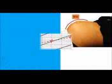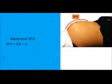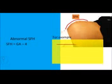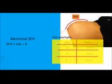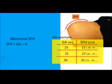The second method is simple and practical. A small fetus is suspected if the SFH is 4 centimeters or more less than the gestational age — for example, when SFH is 28 centimeters at 32 weeks.